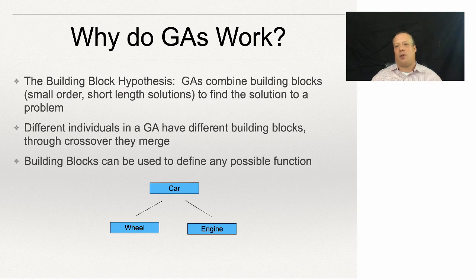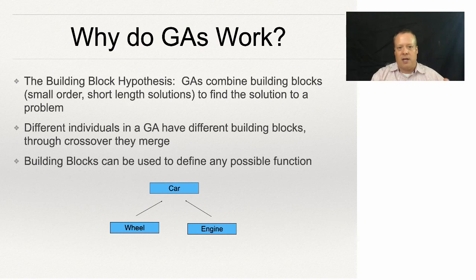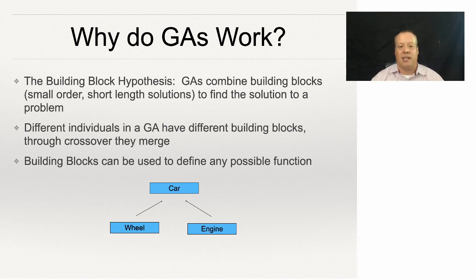That brings up the question: why do GAs work in the first place? John Holland advocated something called the building block hypothesis. Essentially, if you encode your genome correctly — constructing it so that parts of the problem that are relevant to each other are near each other in the genome — then the crossover operation is essentially going to combine those building blocks, those small-order short-link solutions, to find a better and better solution over time. Different individuals in a GA will have different building blocks and crossover will result in their merger.